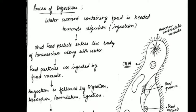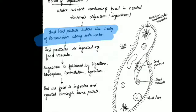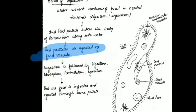As paramecium floats in water, the water current that approaches it brings its food. We can see there is an oral groove formed on the body. The water current approaches from here, and food enters the paramecium through this oral groove. The flow of water strikes the surface, and the food particle with that same current enters inside the paramecium through the oral groove.